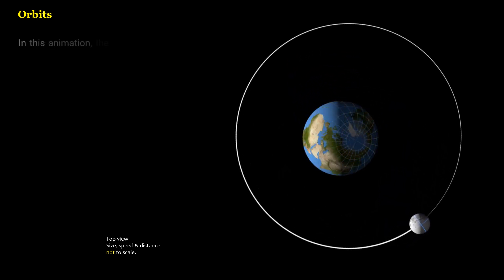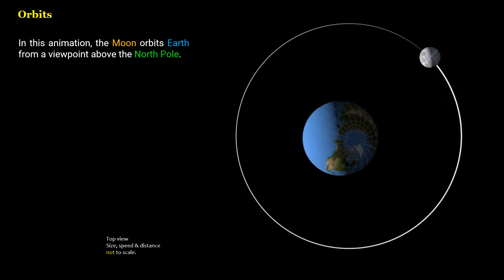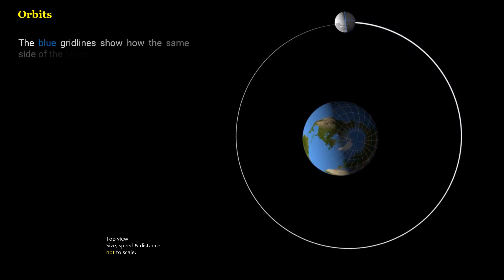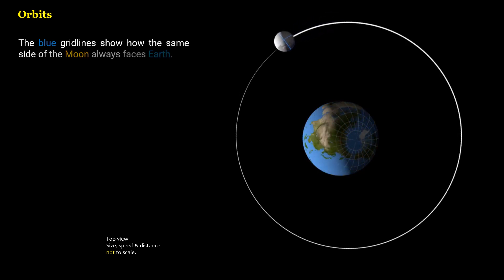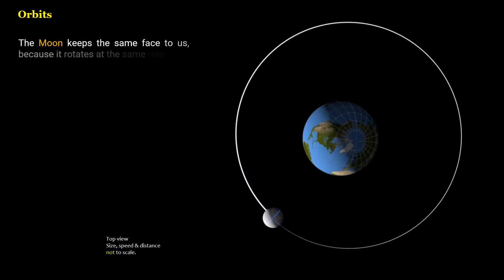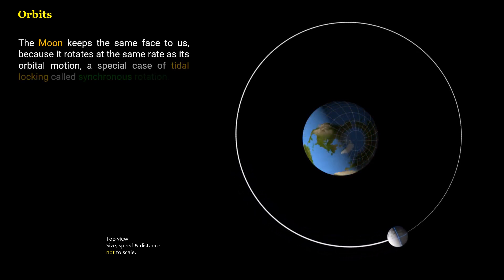In this animation, the moon orbits Earth from a viewpoint above the North Pole. The blue gridlines show how the same side of the moon always faces Earth. The moon keeps the same face to us because it rotates at the same rate as its orbital motion, a special case of tidal locking called synchronous rotation.